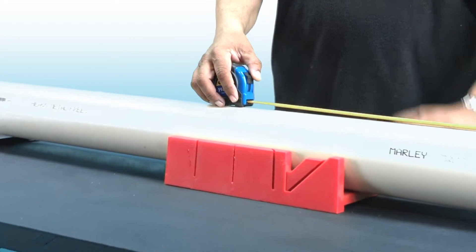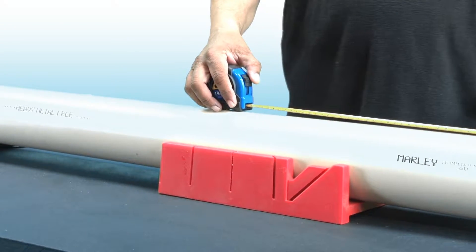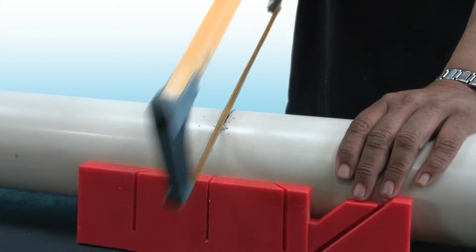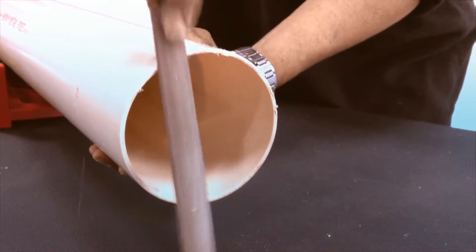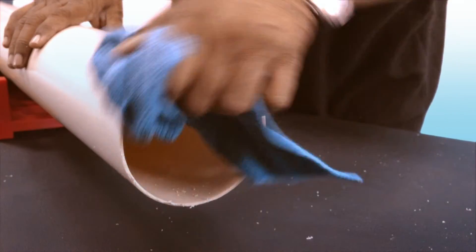Measure the length of pipe and cut it square using a fine-toothed saw and a fabricated mitre box. Make sure all pipe cut ends are chamfered and the resulting swarf removed.